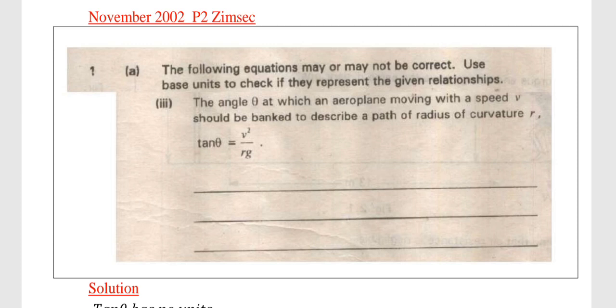So the question reads as follows. The following equation may or may not be correct. Use base units to check if they represent the given relationships. The angle θ at which an airplane moving with a speed v should be banked to describe a path of radius of curvature r is given as tan θ = v²/rg. The question is asking us to use base units to check if it truly represents the given relationship.